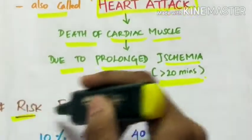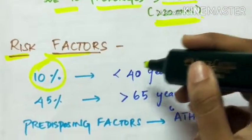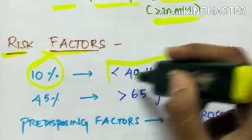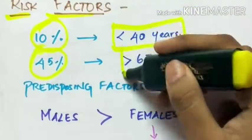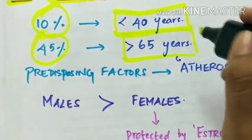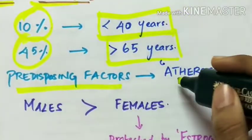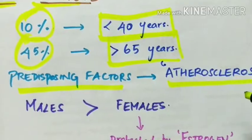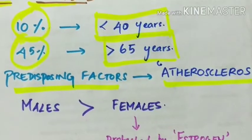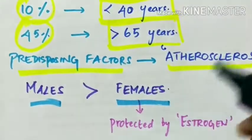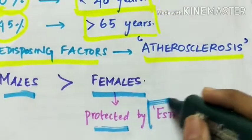Risk factors of myocardial infarction: 10% of cases occur in people less than 40 years of age, and 45% in age greater than 65 years. The main predisposing factor is atherosclerosis. Myocardial infarction is more common in males than in females because females are protected by the hormone oestrogen.